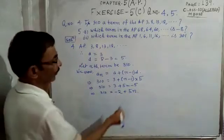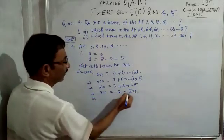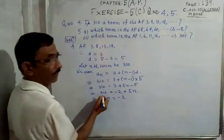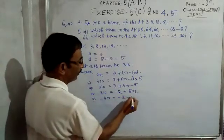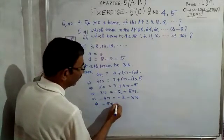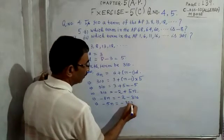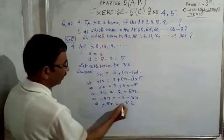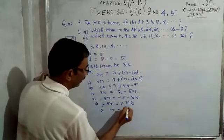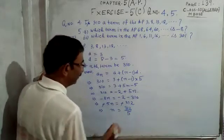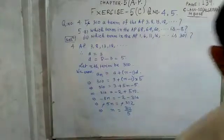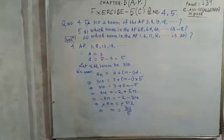To find n, bring 5n to the left: −5n = −2 − 310, giving −5n = −312. Cancelling the negatives on both sides: 5n = 312, so n = 312/5. The value of n is a fraction.